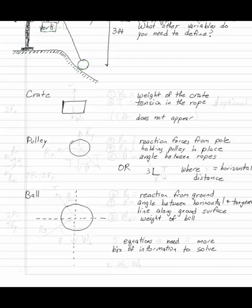Draw the free body diagram for the crate and the pulley and the ball. What are the variables that we're going to need to define based on the problem that we're given to be able to do equations of equilibrium?